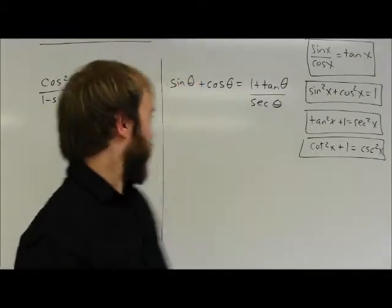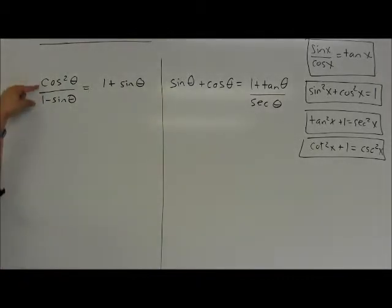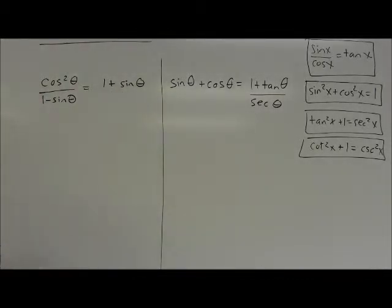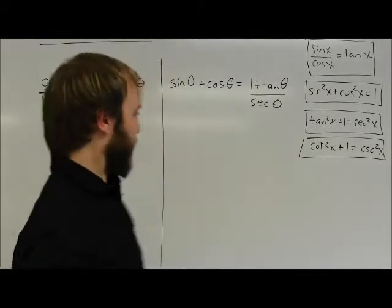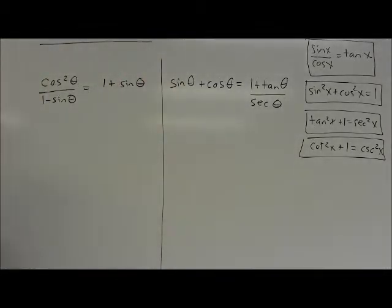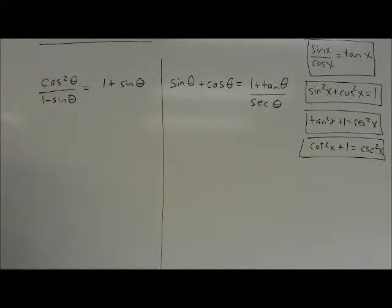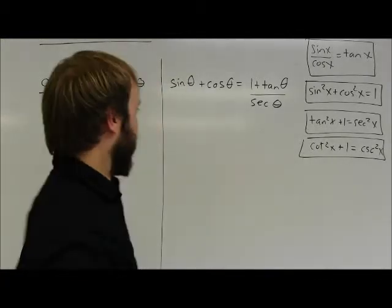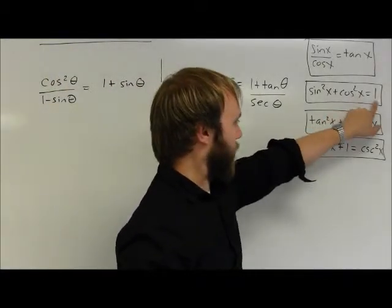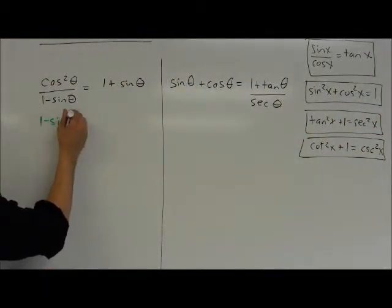Now doing two separate examples side by side. First: cos²θ / (1 − sinθ) = 1 + sinθ. The fraction side is a little more complicated, so I'll start there. I notice that cosine squared of theta can be written in a different form. This is a strange case where I'm actually going to put in a statement that's more complicated: cosine squared of theta equals one minus sine squared of theta. I know that seems strange, but I noticed something here.